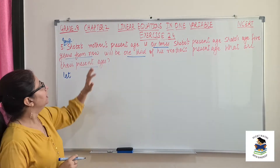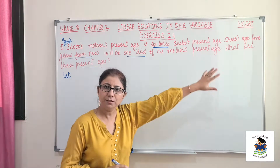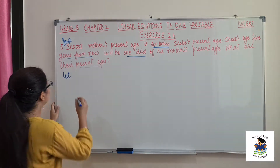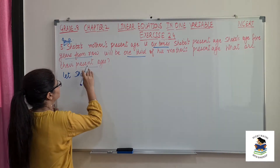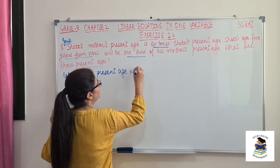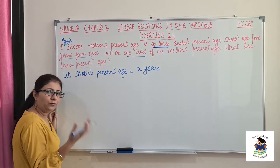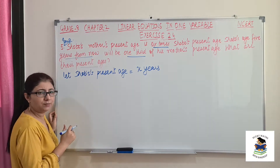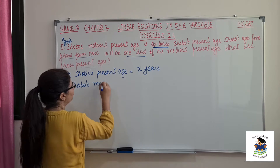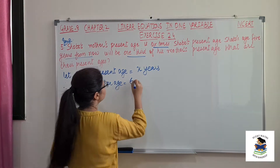We will see which variable will be independent and which is dependent. Mother's age is dependent on Shobo's age. So we will assume x as Shobo's present age. If his age is x years, what will be his mother's age? It is 6 times x, therefore Shobo's mother's age is 6x years.